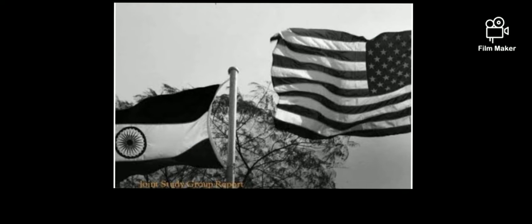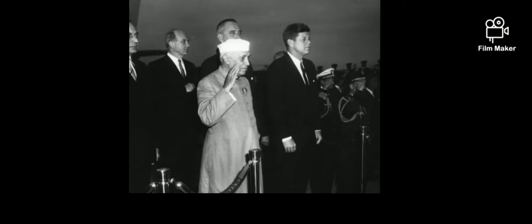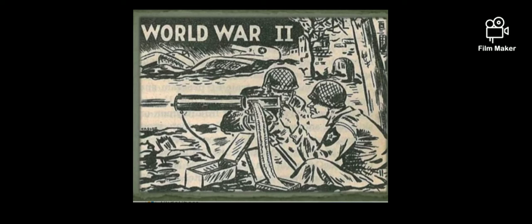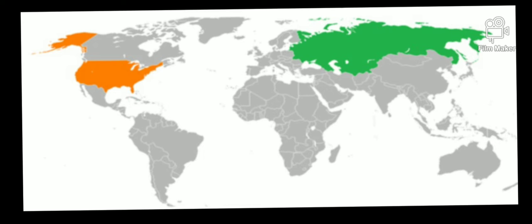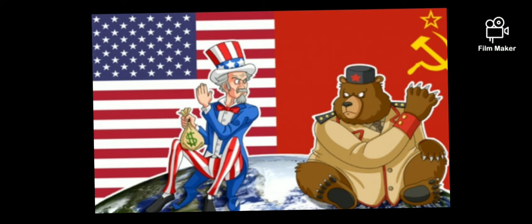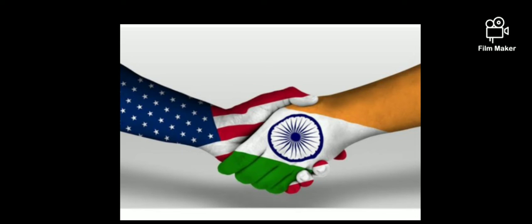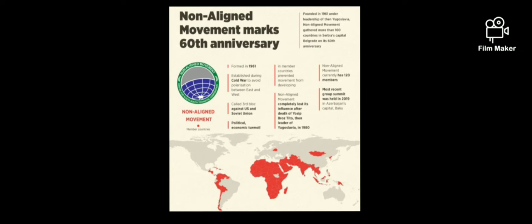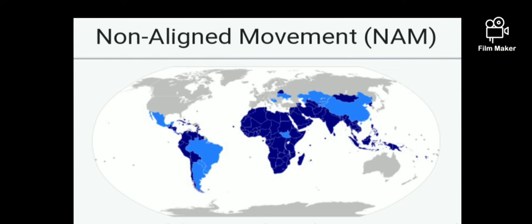Talking about historical relations between India and the US, there were many challenges between the two countries soon after 1947. After the Second World War, there was huge competition between the US and the USSR to make groups of countries on the basis of capitalism or communism. America wanted India to join their capitalist grouping, but India chose to be non-aligned, adopting an independent foreign policy through the Non-Aligned Movement in 1961.